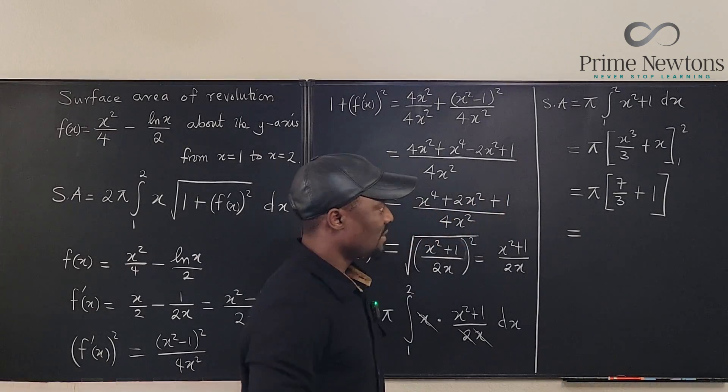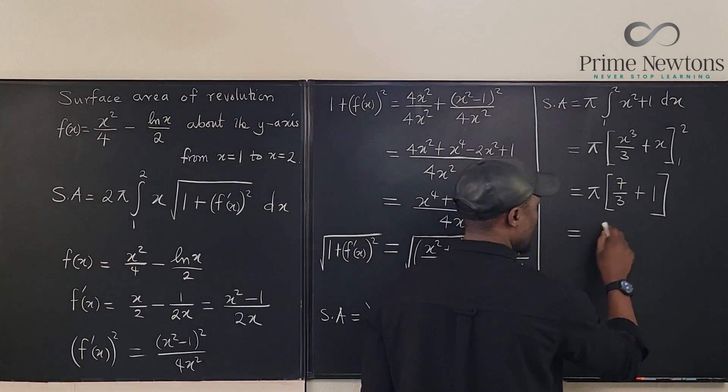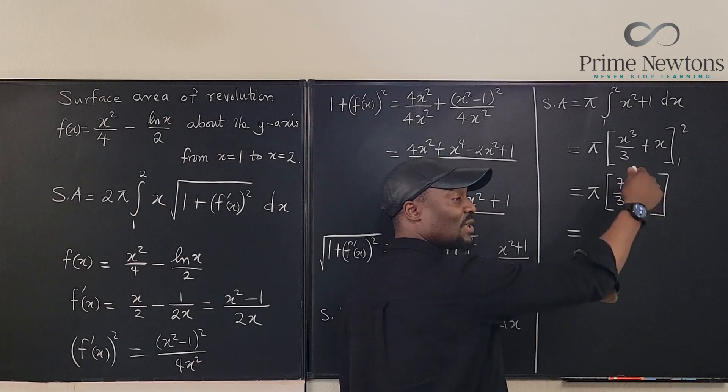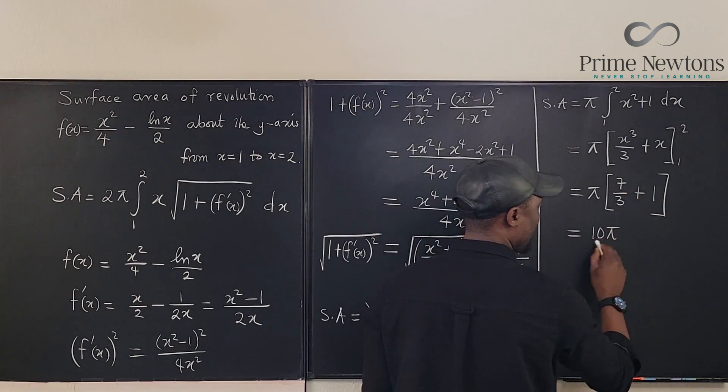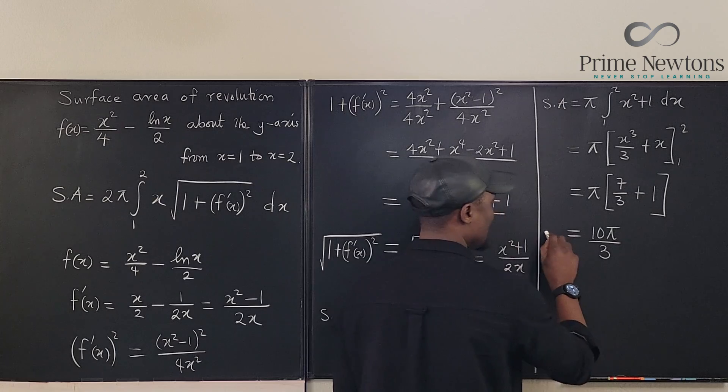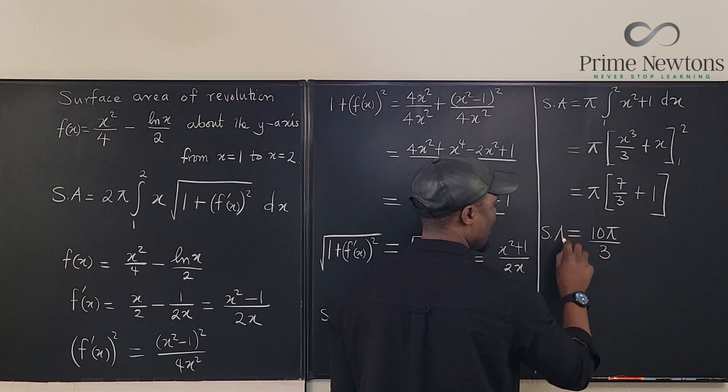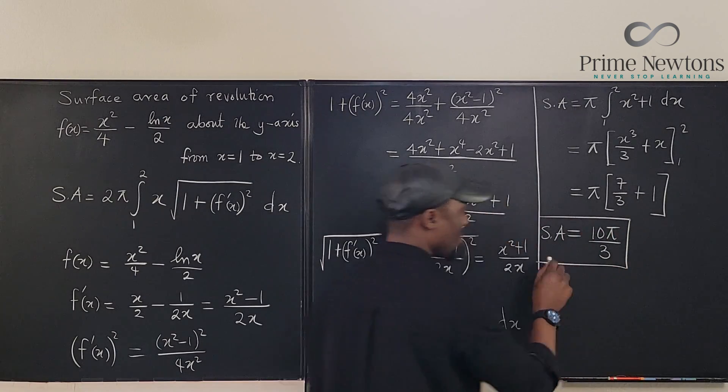Now, what is this? This is 10. Remember, you can write this 1 as 3 over 3. Well, it means 10 pi over 3 is the surface area. And that's our answer for this exercise.